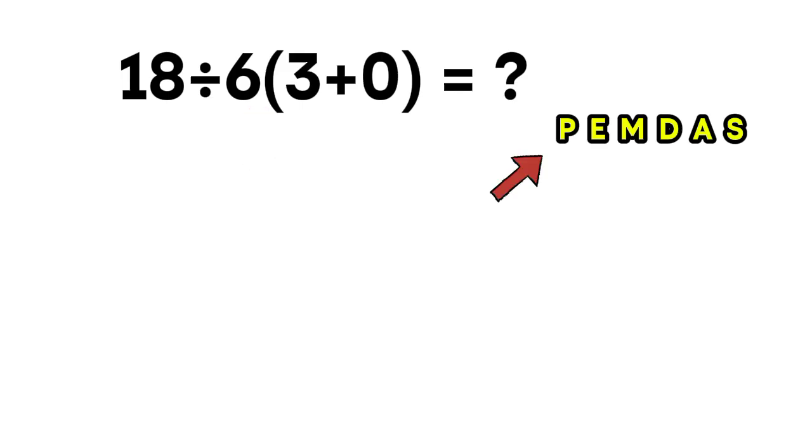So using PEMDAS, we are required to handle the parentheses first, then perform the division, and only after that do the multiplication. If we reverse the division and multiplication, the answer becomes wrong. So let's start.